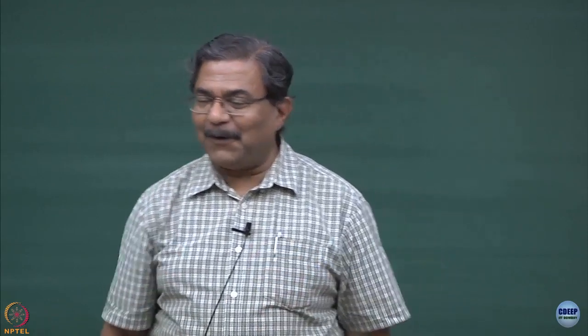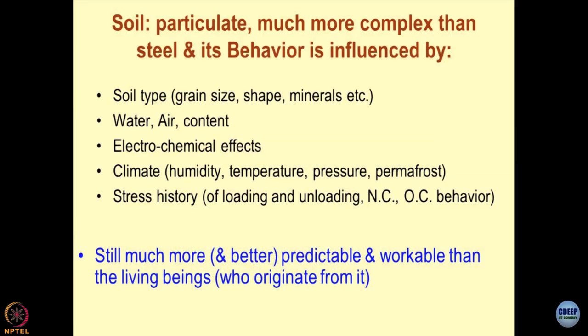Soil is a four-phase system. The properties of soils depend upon soil type — size of grains, shape of grains, minerals present. Then we talk about water content, air content, degree of saturation. Conventional geomechanics deals with a two-phase system; unsaturated soil mechanics with a three-phase system; and today I introduce in the lecture the multi-phase system — electrochemical effects, climatic effects, humidity, temperature, pressure, and permafrost conditions all influencing soil properties.